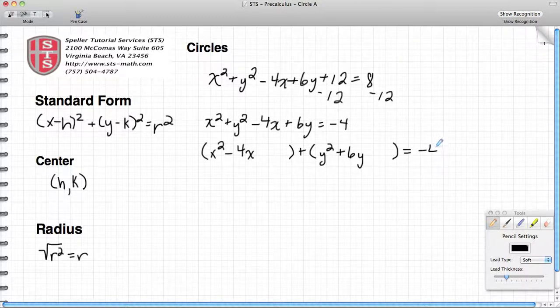To complete the square, that's a principle where I take this coefficient of the variable that's not squared, in this case negative 4, take half of that, and then I'm going to square that number. So here I have negative 4 divided by 2, leaves me negative 2 to the second power, and negative 2 times negative 2 is going to give me a positive 4.